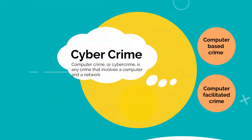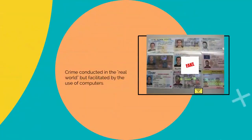Computer facilitated crime is crime conducted in the real world but facilitated by the use of computers. A classic example of this sort of crime is fraud. Computers are commonly used to communicate with other fraudsters, to record or plan activities, or to create fraudulent documents.